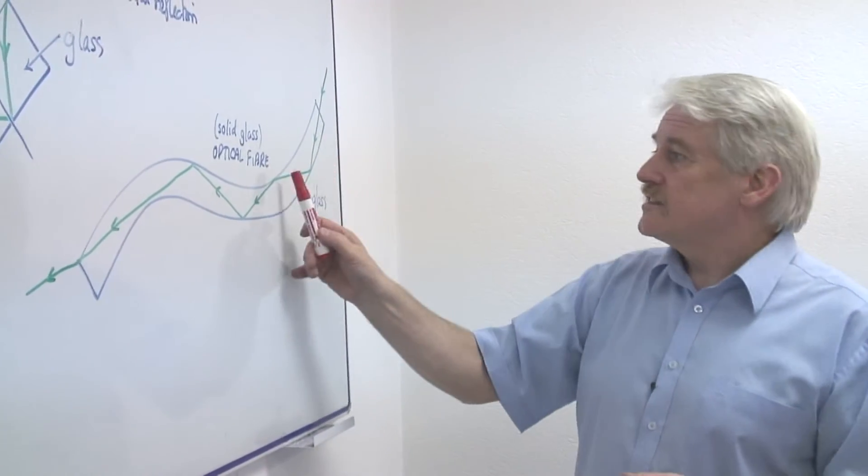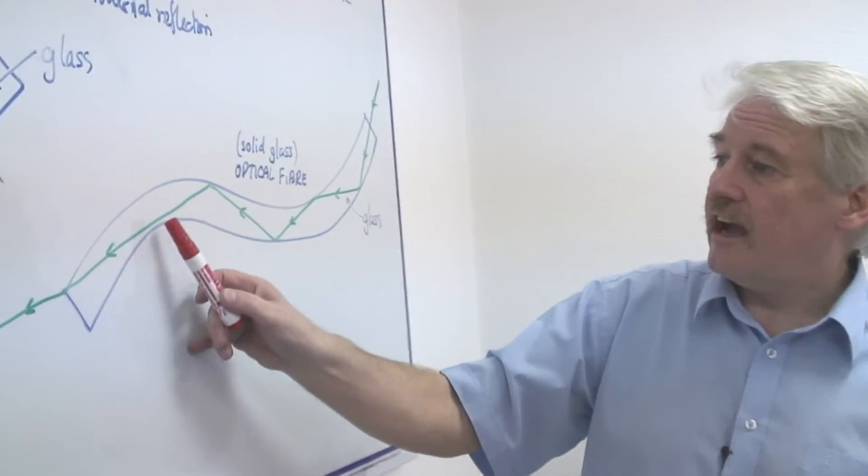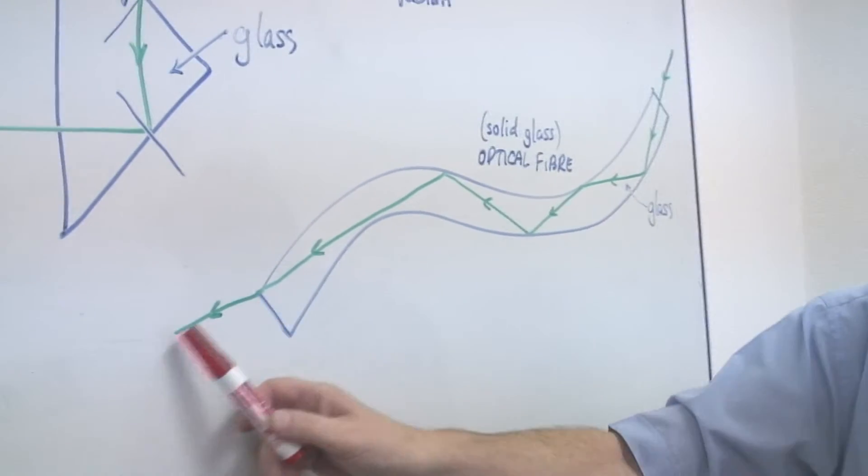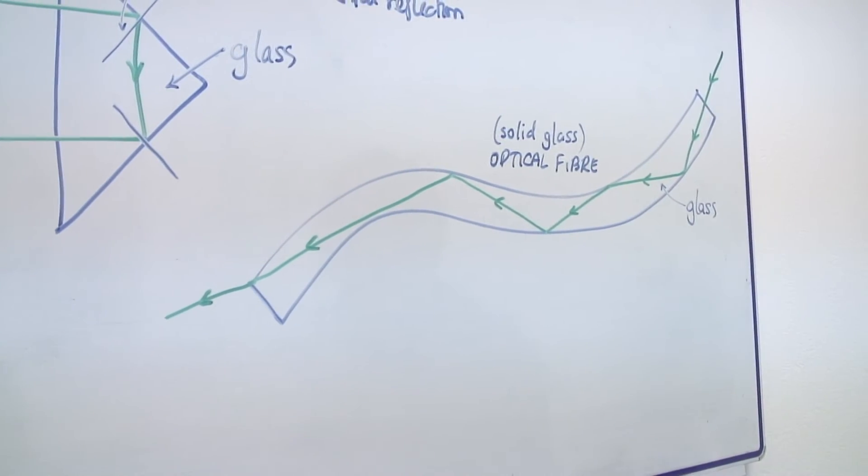So you get continuous reflections down the light fibre, and out it comes at the other end.